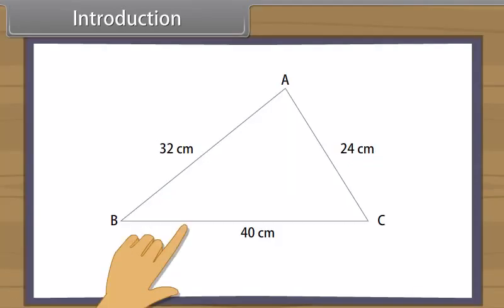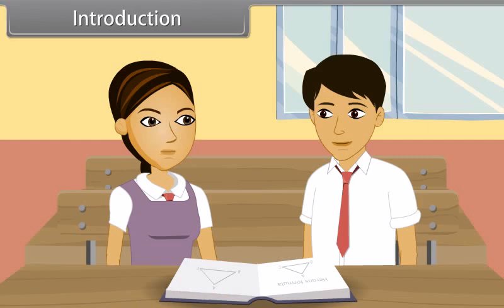I have to find the area of this triangle. Oh, it's easy. We can calculate its area by using Heron's formula. Heron's formula? Yes, Heron's formula. We use this formula to find the area of a triangle when the height of the triangle is not given. Come, I will tell you more about Heron's formula.